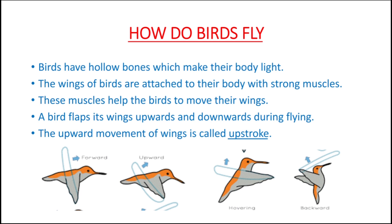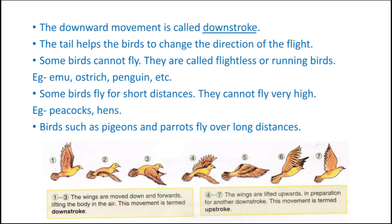Birds have wings which help them to fly. A bird flaps its wings upwards and downwards during flying. The upward movement of wings is called upstroke. The tail helps the birds to change the direction of flight.